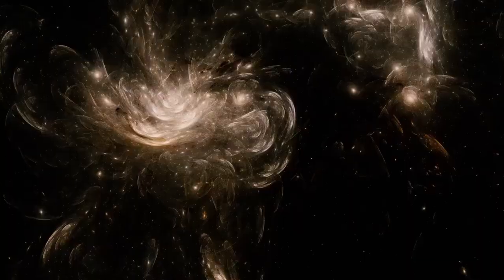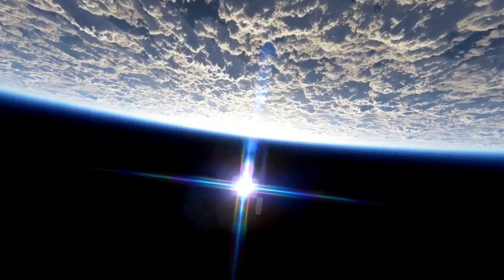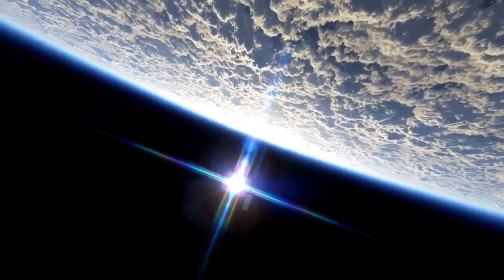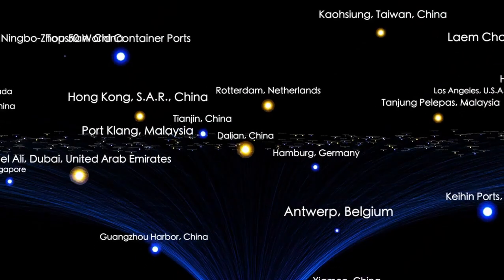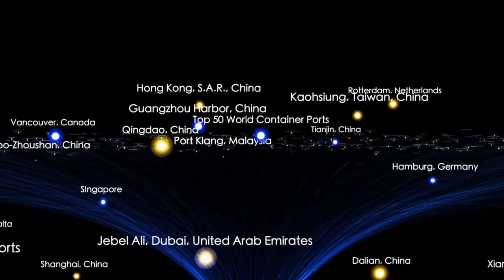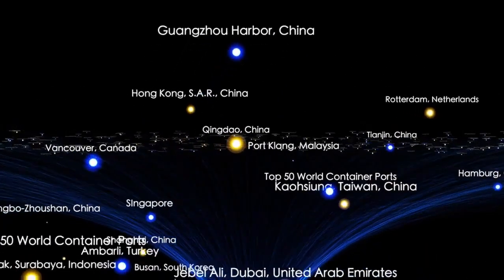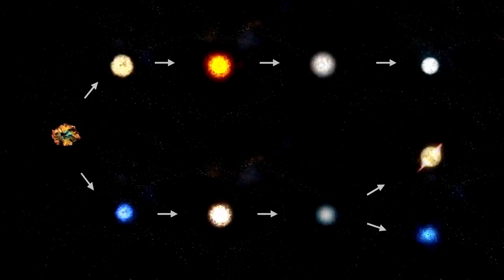Now let us try to wrap our heads around the immense size of the entire universe. Scientists believe the universe stretches about 93 billion light-years across. But what exactly is a light-year? It is the distance light can travel in one year, equivalent to a whopping 63,000 astronomical units. When we consider that each light-year measures an incredible 9 trillion kilometers or 6 trillion miles, we start to grasp just how vast the universe truly is.